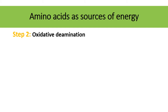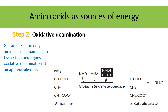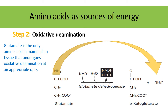In step two — oxidative deamination — the glutamate formed during transamination (or available from protein breakdown in tissues) undergoes oxidative deamination, resulting in production of alpha-ketoglutarate and ammonia. Glutamate is the only amino acid in mammalian tissue that undergoes oxidative deamination at an appreciable rate. This reaction requires NAD and water, and the enzyme is glutamate dehydrogenase.